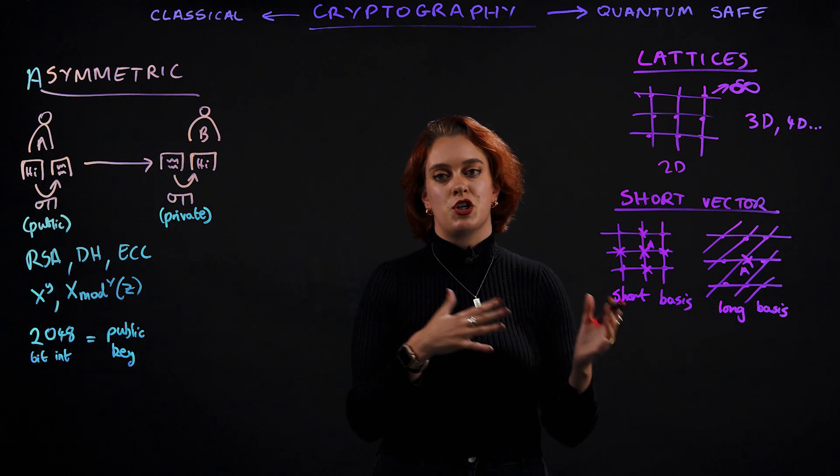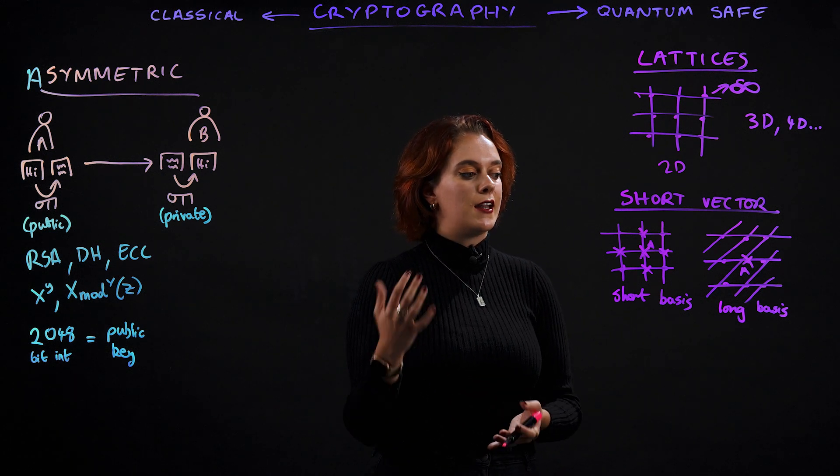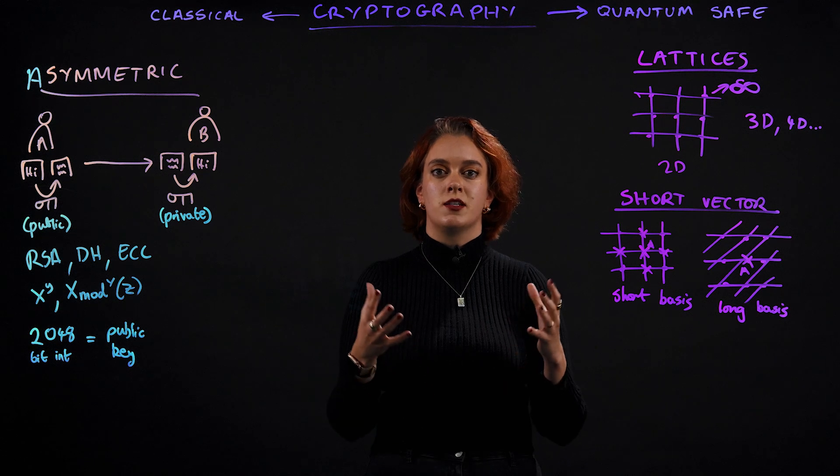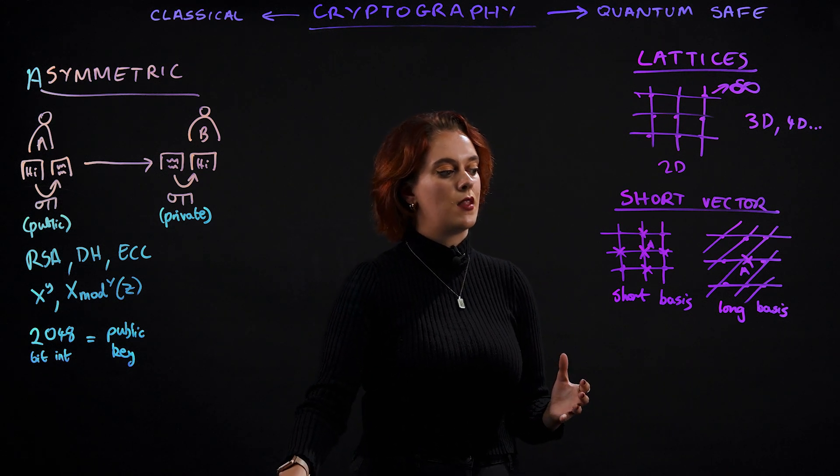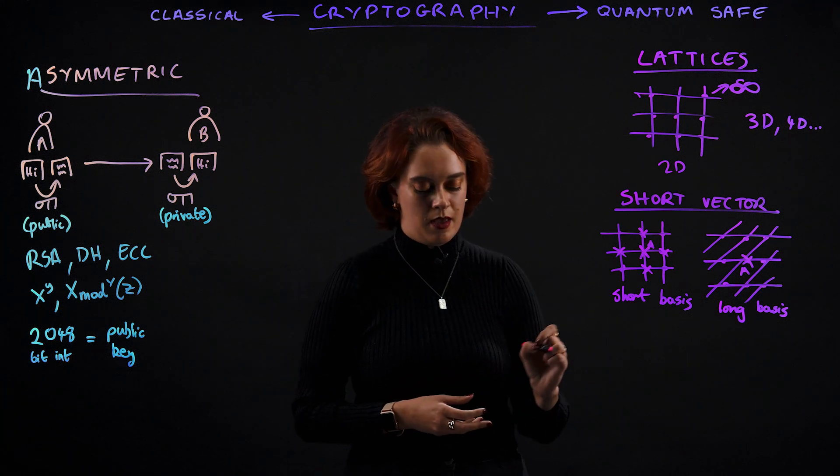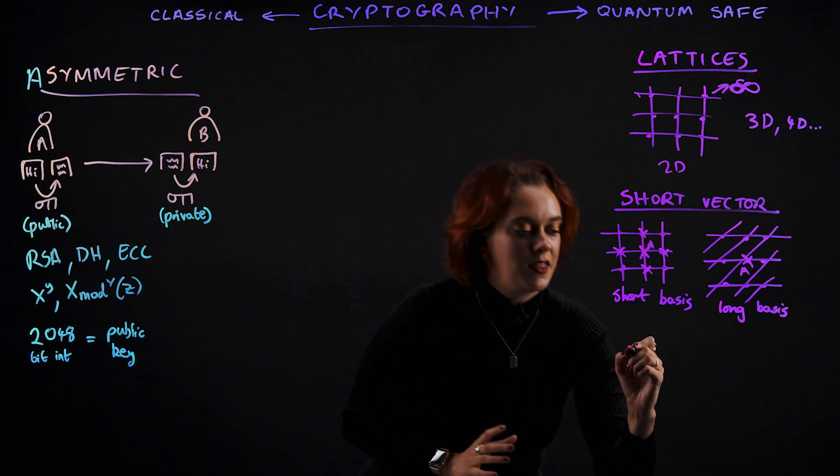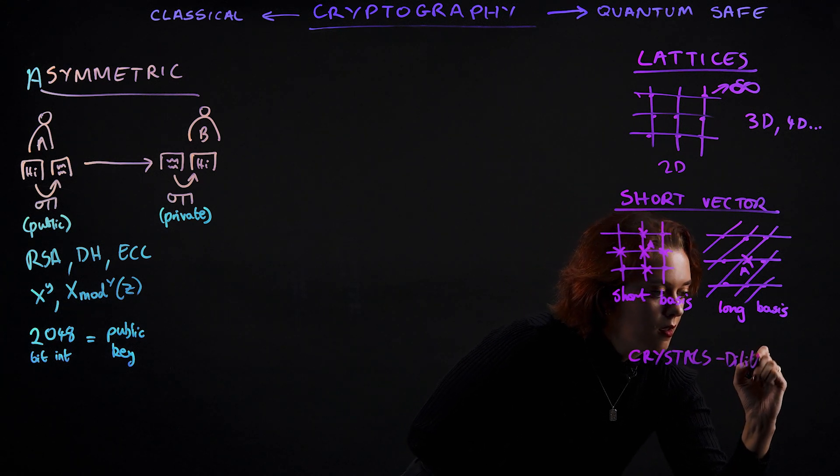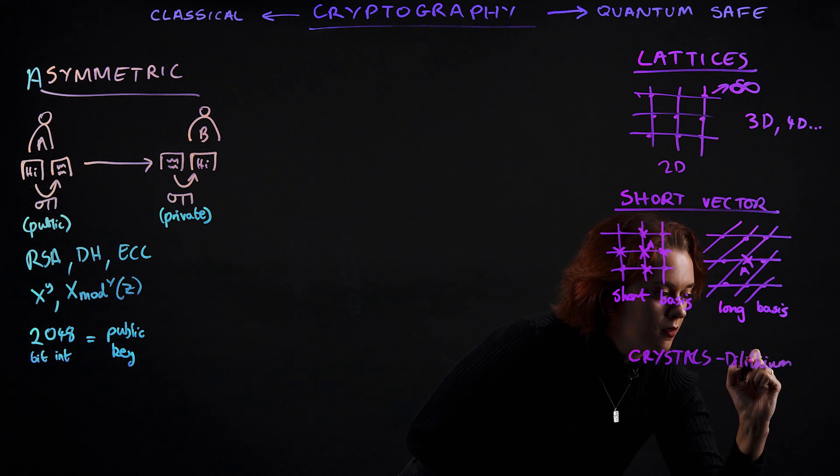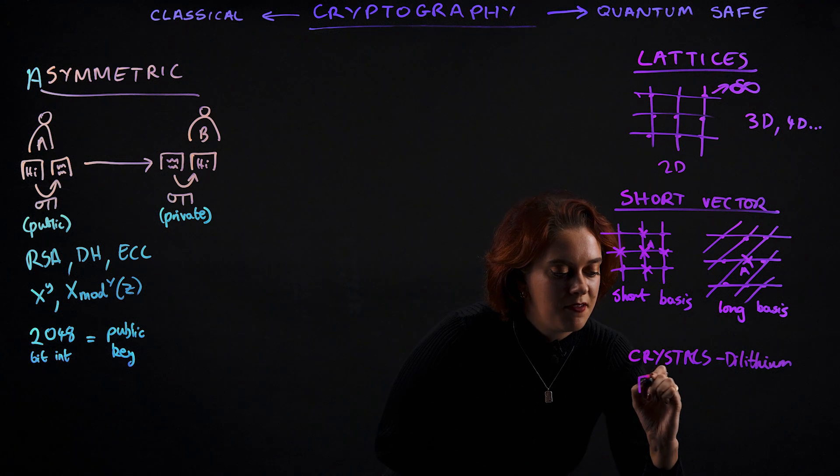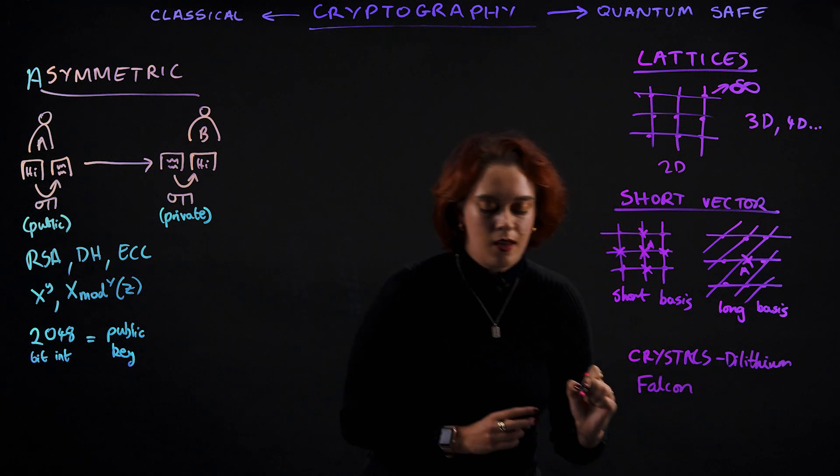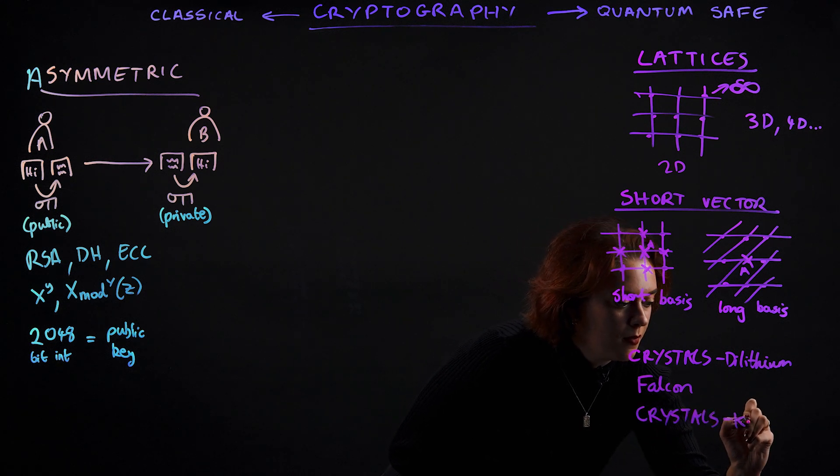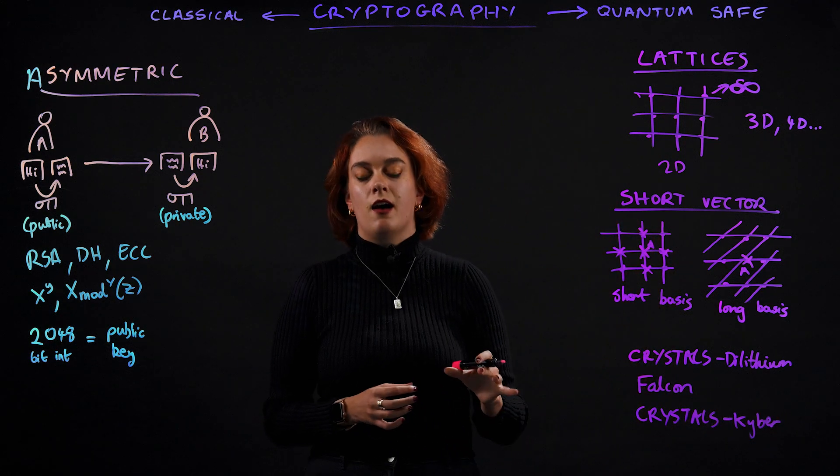But NIST has actually been researching different standards already since 2016. And in July of 2022, they identified four different standards that organizations can start looking into to become quantum safe. And three of those were developed by IBM. They include Crystals-Dilithium Digital Signature Algorithm, as well as the Falcon Digital Signature Algorithm, and lastly, the Crystals-Kyber Public Key Encryption Algorithm.